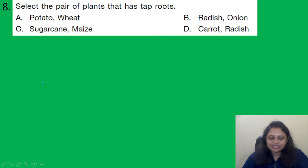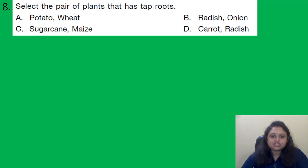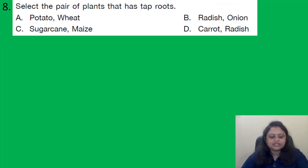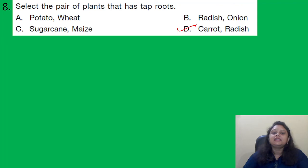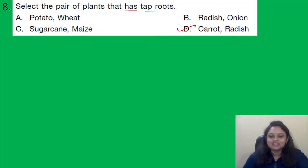Next question: Select the pair of plants that has tap roots. Options are: A — potato, wheat; B — radish, onion; C — sugarcane, maize; D — carrot, radish. The correct answer is option D: carrot and radish have tap roots.